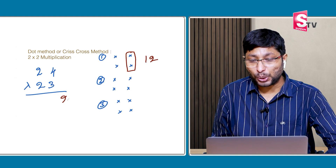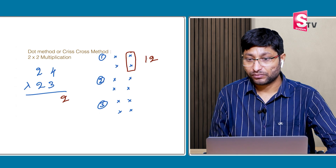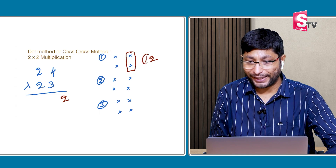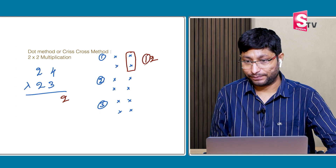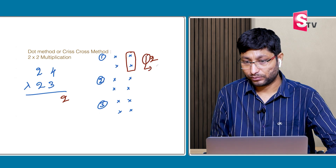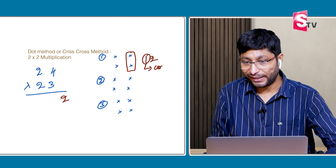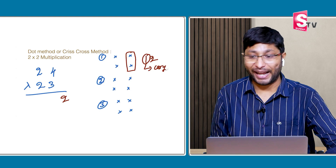4 × 3 is 12. Write down the 2 here; 1 will be carry.